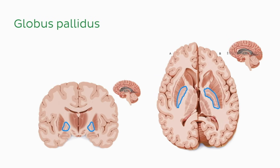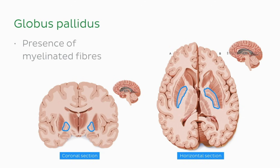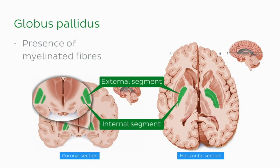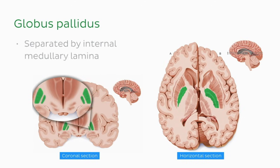You can now see the globus pallidus in the coronal and horizontal sections through the brain. You'll notice that the globus pallidus appears lighter than the rest of the corpus striatum due to the presence of myelinated fibres. In this view, you can easily identify the internal and external segments, and you can also see that they are separated by an internal medullary lamina.